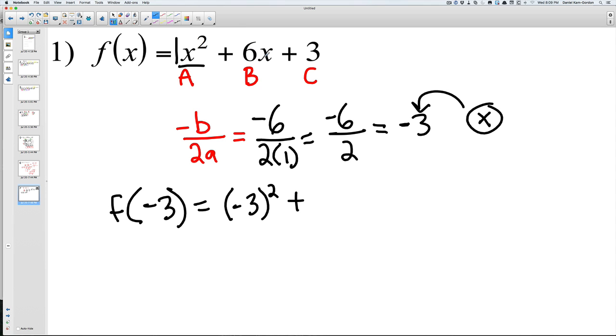Then we're going to add on to that our b value, which is 6x. So we're going to do 6 times our x, which is negative 3. Then we're going to bring in our c, which is 3, and then we're just going to solve it. Negative 3 squared, negative 3 times negative 3, is 9.